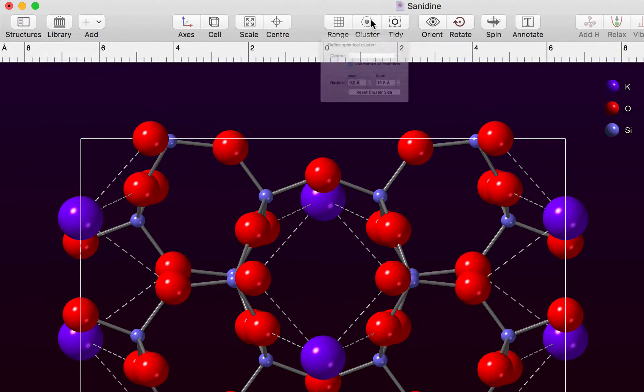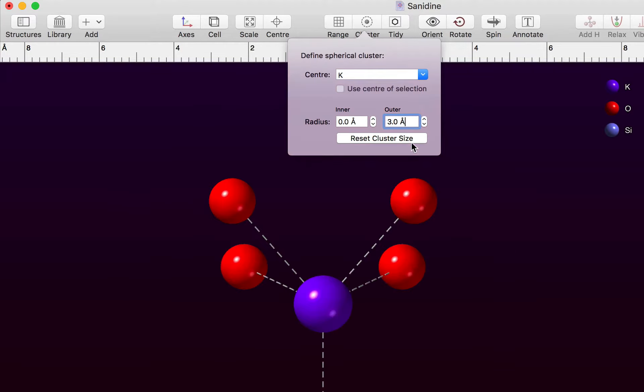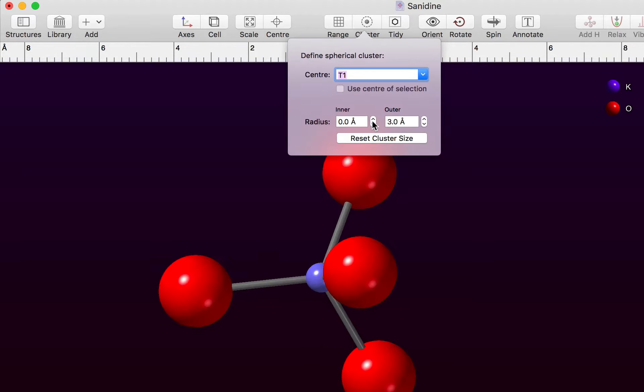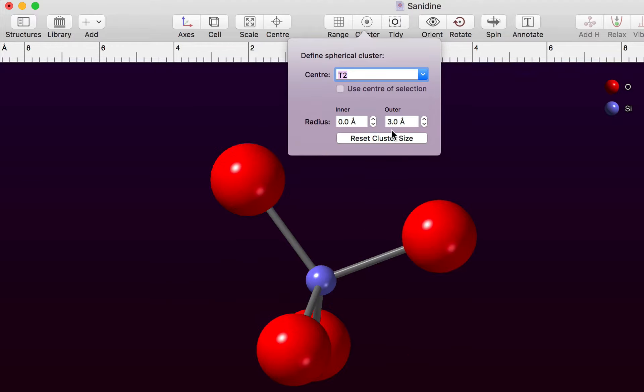So let's enter a size, let's go to three angstroms, and we can choose different sites using the combo box. We can cluster around a T1 site and a T2 site in this structure.